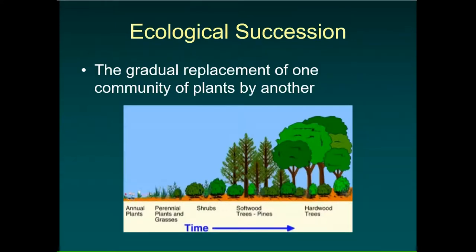Ecosystems are not static — terrestrial forest ecosystems here in the eastern US change over time through a process called succession. Succession is the change of a given ecosystem over time. If we let a forest go with no other inputs — no invasive plants, no human impacts — this is the natural progression a terrestrial forest would take. If you take it back further, you could start all the way with a pond that slowly silts in, dries out, becomes a meadow, and the meadow slowly transitions into a forest.